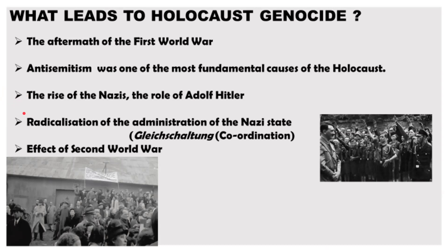The third reason was the rise of the Nazis and the role of Adolf Hitler. The Nazis were racist and believed that what they called the Aryan race was superior to others. The Nazis defined an Aryan as somebody who is German, and believed that Jews, Roma, Black people, and other ethnic groups were inferior to Aryans. As leader of the Nazi Party, Adolf Hitler played a key role in the ideas behind the events leading up to and the unfolding of the Holocaust.